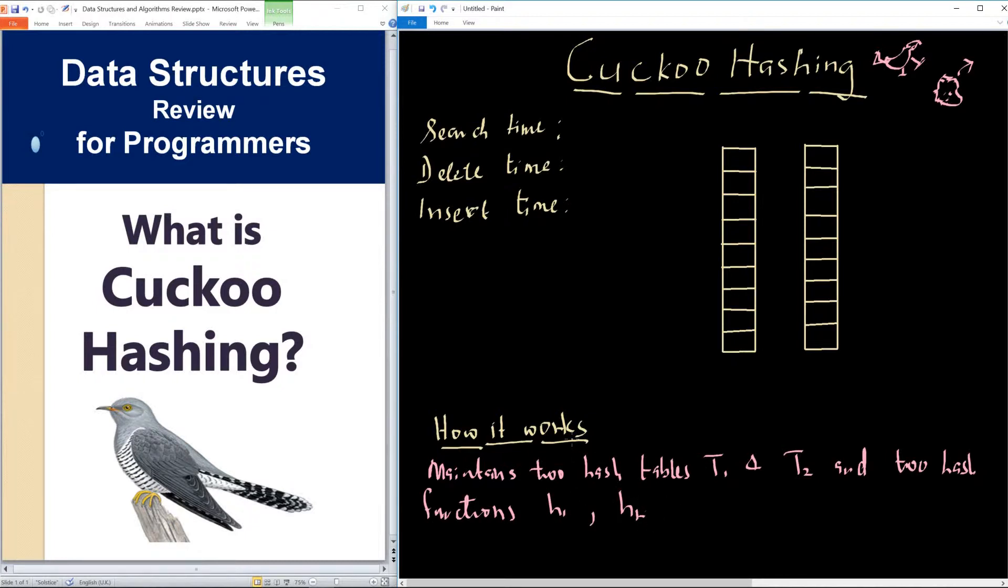Each item has one of two locations for hashing. For instance, if we want to hash an item X, it means that X has two locations it could hash into: H1 of X and H2 of X. The hash time is actually constant time, O(1).